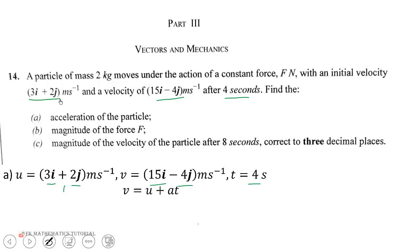We substitute v, u, and t to solve for a, which is acceleration. The final velocity (15i - 4j) equals (3i + 2j) plus 4a.